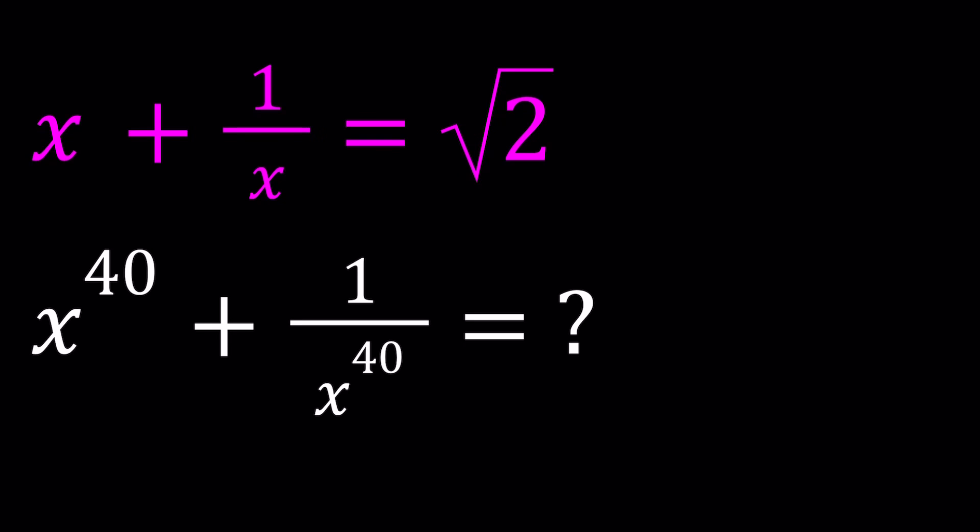One of the things you could definitely do — which is probably something you should never do — is raise both sides to the 40th power. That would give you x to the 40th plus 1 over x to the 40th, but it will also give you a bunch of other terms which you'd have to find out. Anyways, here's the first method.